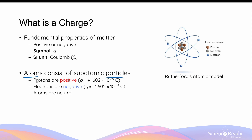In the atom, protons, which are in the nucleus, are positively charged. Specifically, the value in Coulombs is positive 1.602 × 10⁻¹⁹ Coulombs. Electrons, which are orbiting the nucleus, are negatively charged, with the same value in Coulombs but negative. Unlike protons and electrons, neutrons, which are also in the nucleus, do not have a charge — so they are neutral or uncharged.